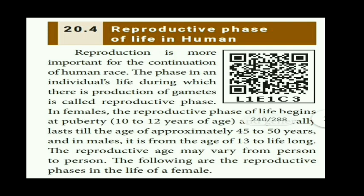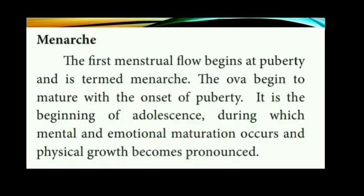The reproductive phase may vary from person to person. The female has different reproductive phases: menarche, ovulation, pregnancy, menstruation, and menopause. The beginning of menstruation or the first menstrual cycle is called menarche. It is the beginning of adolescence, during which mental and emotional maturation occurs and physical growth becomes pronounced.